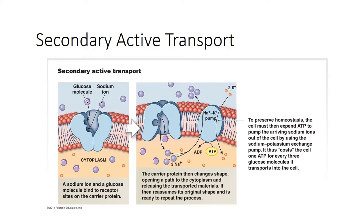Secondary active transport depends on the ion gradient established via primary active transport. The energy stored in those ionic gradient differences can be used indirectly to drive the transport of other solutes. Primary active transport is a direct expenditure of energy; secondary active transport is indirect — it taps into a previously established energy gradient. Co-transport allows more than one substance to be transported at a time. Substances transported in the same direction use symport; substances transported in opposite directions use antiport.